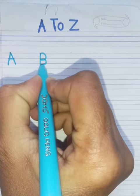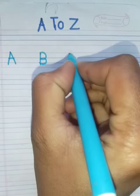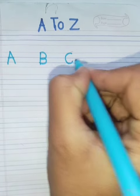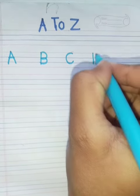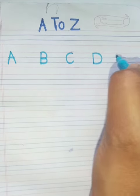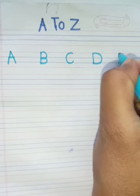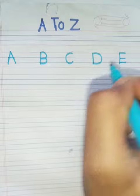B, B for ball. C, C for cat. D, D for dog. E, E for elephant.